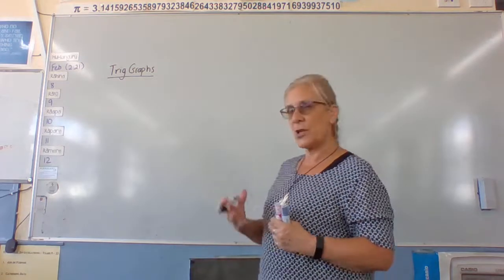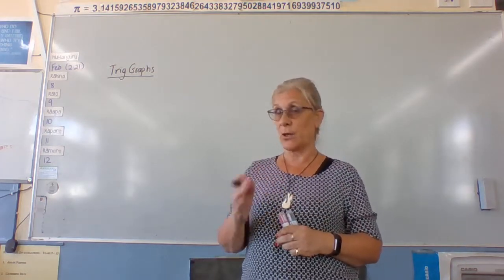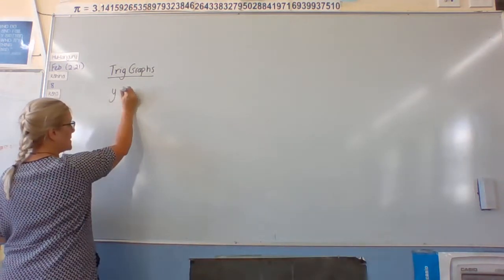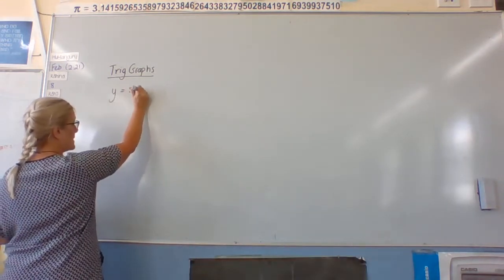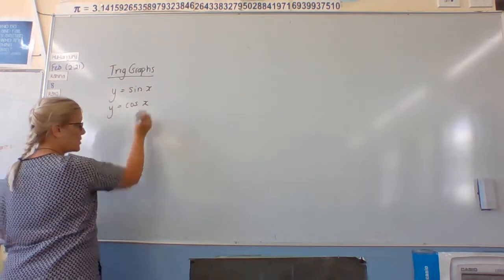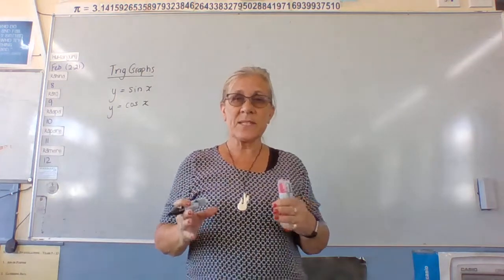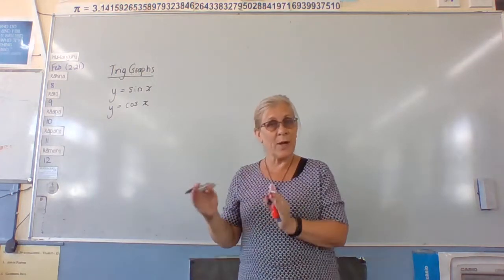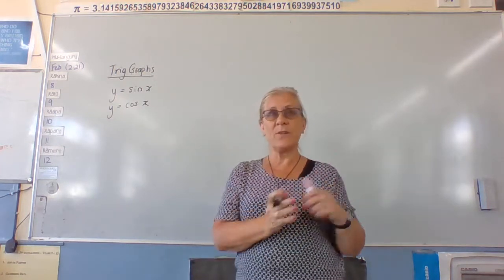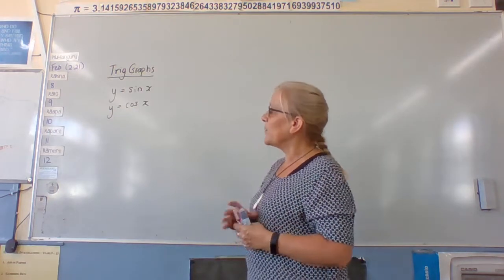We can use trig graphs to represent this. We're actually only going to use the sine and the cosine graph, so we would write these as y equals sine x and y equals cosine x. These are the two we're going to use. This particular achievement standard is two halves and we're only going to learn the one half, which is all about the trig graphs.